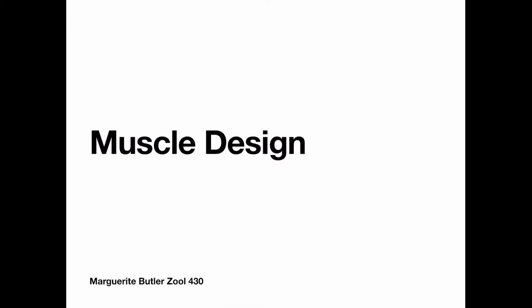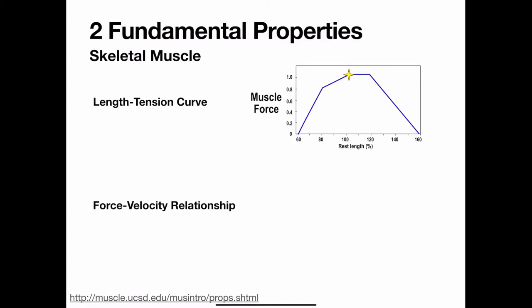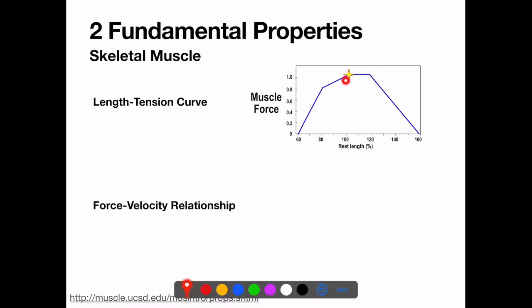Welcome back. We're going to talk about muscle design. The two fundamental properties that we've already learned help us to understand a lot. The first is the length-tension curve, where the maximal force of a muscle fiber is at about resting length, or a little bit longer than resting length. That's thought to have to do with the structure of actin and myosin, where we have the greatest degree of overlap for the cross bridges.